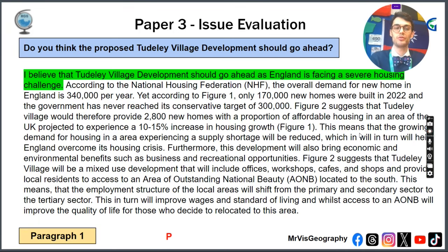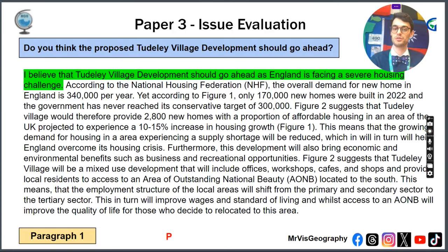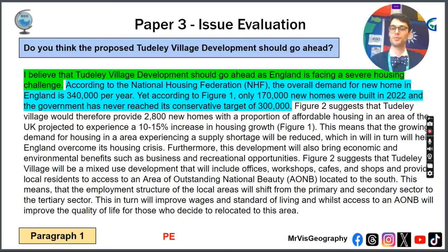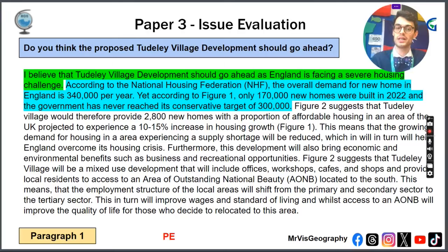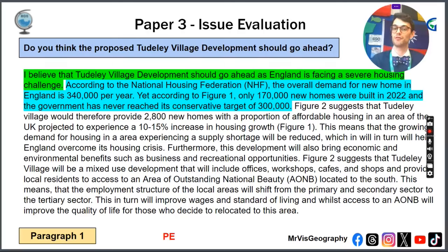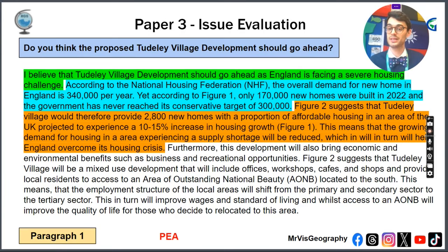Here's a model answer. In paragraph 1, your point could be: 'I believe the Totally Village development should go ahead as England is facing a severe housing shortage.' The evidence from the booklet says that according to the NHF, the overall demand for new homes in England is 340,000 per year. Yet, according to figure 1, only 117,000 new homes were built in 2022, and the government has never reached its conservative target of 300,000 — regardless of whether it's a right-wing or left-wing government.